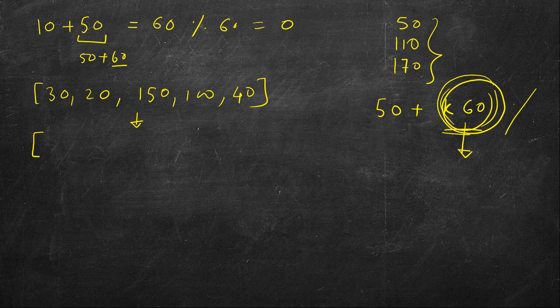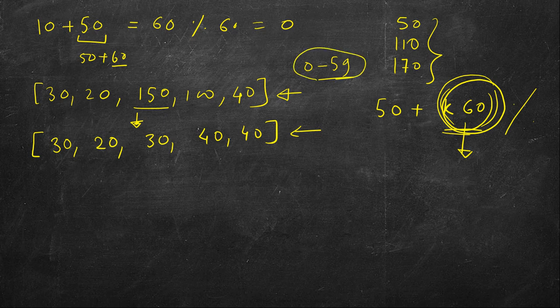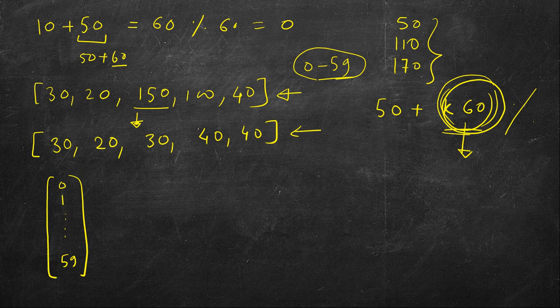Instead of working with the original array, we work with values ranging from 0 to 59 by taking modulo 60. Finding pairs whose sum is a multiple of 60 in this reduced array is equivalent to the original problem. Since all values lie in the range 0 to 59, we will maintain a count map of size 60 — tracking how many times each remainder from 0 to 59 appears.